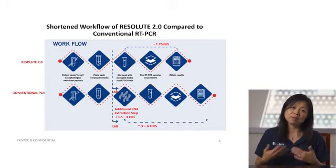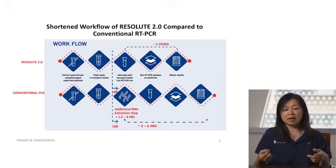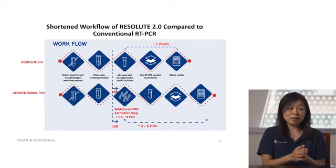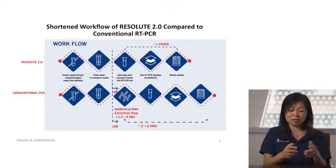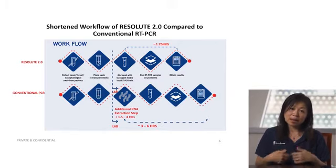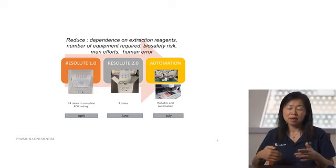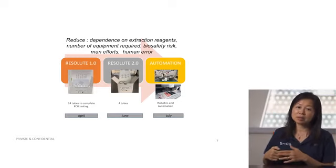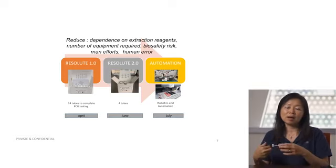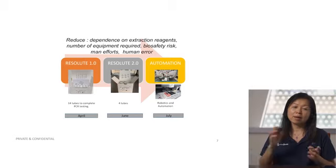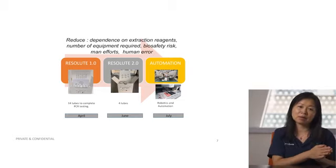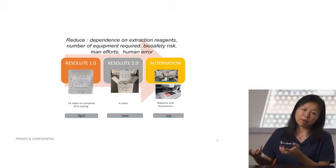Turnaround time is not just about having an assay that runs quickly — it's also about being able to run 96 samples in a row. All of this is part of the consideration for increasing throughput. Resolute 2.0 is actually a process of iterative improvement, starting from Resolute 1.0. This slide shows the progress of how we continue to improve as a result of user feedback — we go to end users, come back, iterate and improve, then return with an improved product.